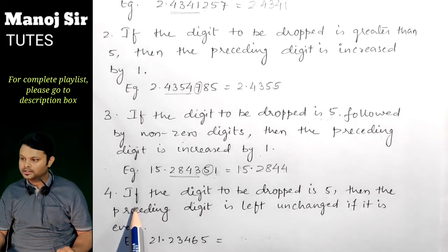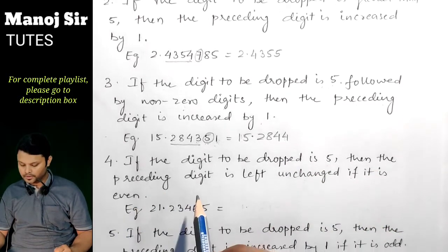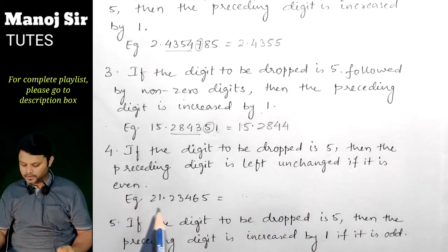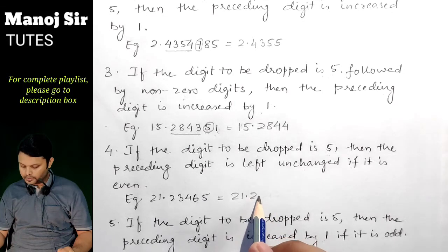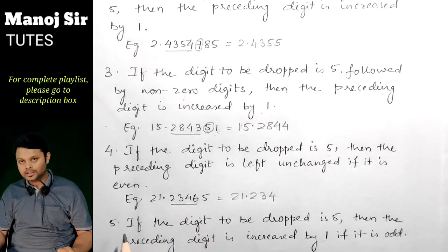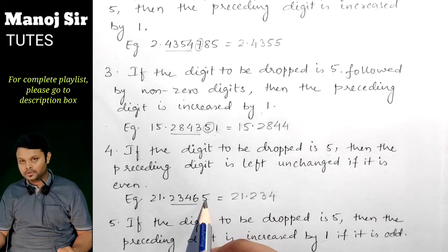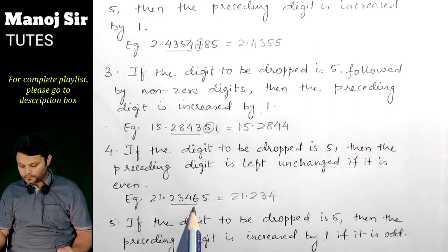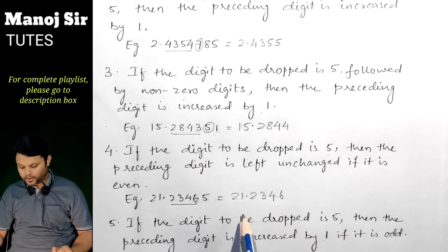Rule number 4: if the digit to be dropped is 5 — and there are no non-zero digits following it — then the preceding digit is left unchanged if it is even. For example, 21.23465 rounded to 4 decimal places. The fifth digit is 5 with nothing after it. The preceding digit is 6, which is even, so it remains unchanged, giving us 21.2346.